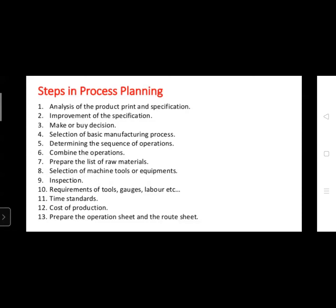The first step is analysis of the product using software, changing dimensions or specifications. The second is improvement of specifications — for example, if a certain material percentage is not up to the mark, reduce it; if too much speed is applied and the product can't withstand it, determine the correct speed. This is the improvement of specifications.